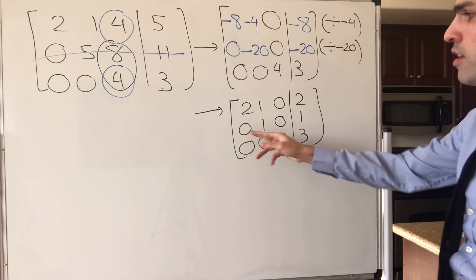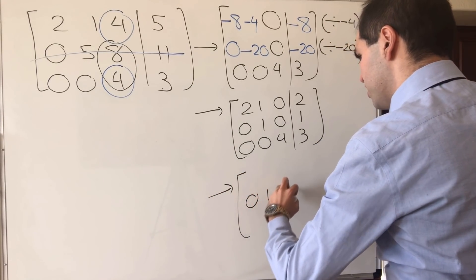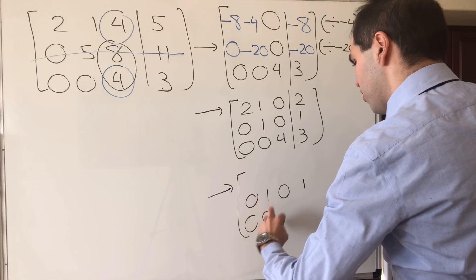And now, notice, you are done with the second and third rows. So you get 0, 1, 0, 1, 0, 0, 4, 3.